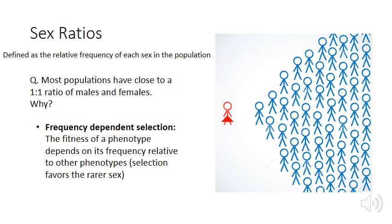Imagine a population with a large group of males and only one female. Almost regardless of the breeding system, that female will be able to reproduce, while many males face intense competition. The females she produces will have a much greater chance of reproduction than the males she produces, who are still in a highly competitive environment. So the fitness benefits of producing female offspring are much greater than the benefits of producing male offspring in this case.